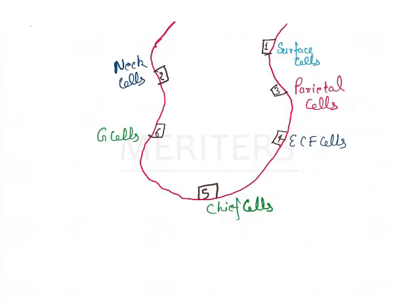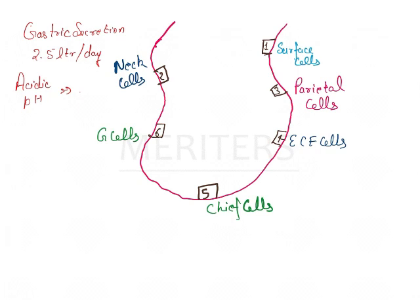If we try to understand gastric secretion, the total secretion per day is about 2.5 liters per day. The pH is acidic — generally 1.8 is the average pH, but we can consider this to be 1.5 to 3.